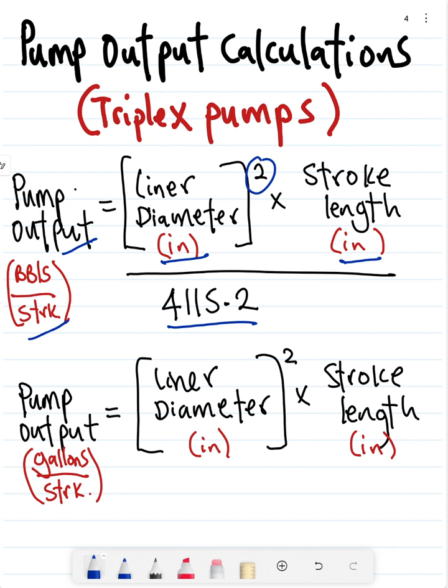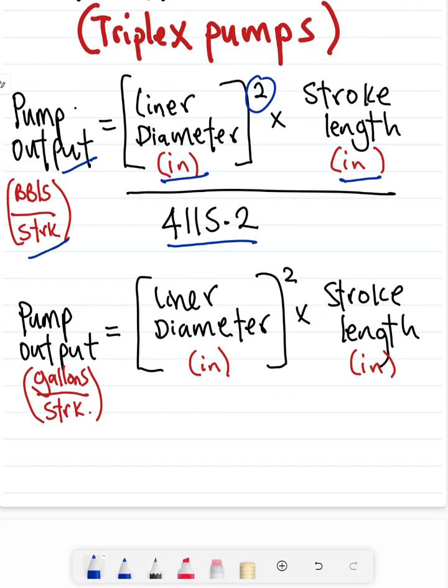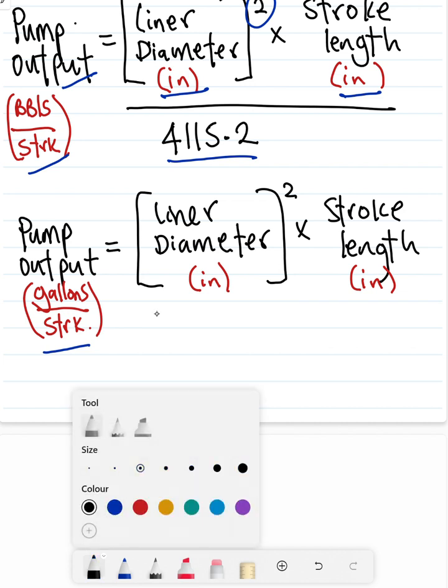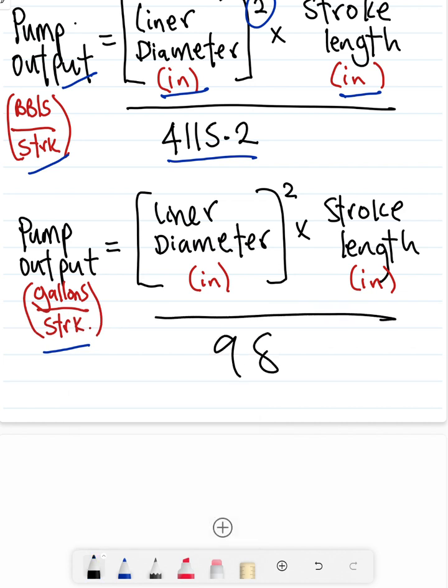The constant is 4115.2 if you're calculating barrels per stroke. If you're calculating gallons per stroke, your liner diameter in inches squared times your stroke length in inches divided by 98. So your constant here is 98 for gallons per stroke, while for barrels per stroke it's 4115.2.